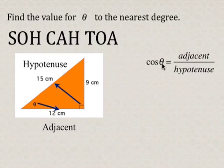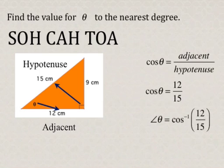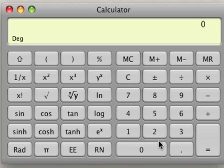as I said before, and that's adjacent over hypotenuse, and so when we substitute, cosine theta is equal to 12 over 15, and when we take the inverse cosine of 12 over 15,